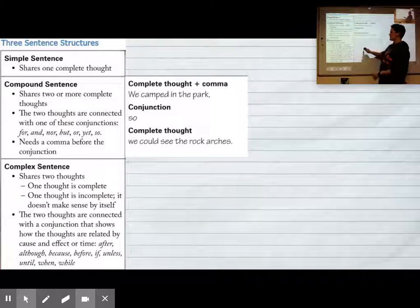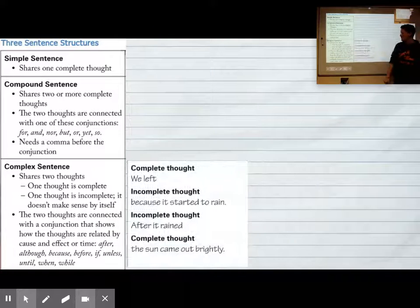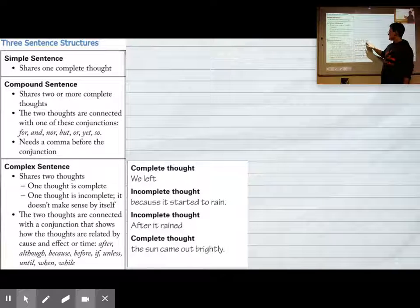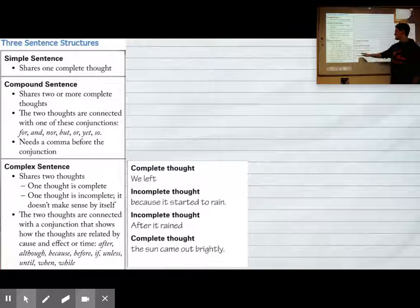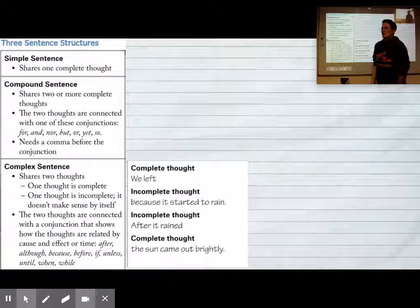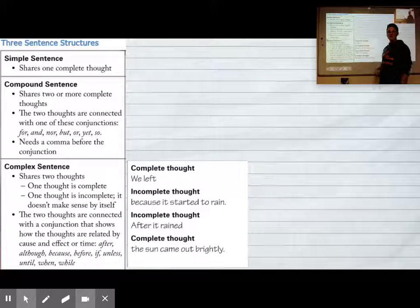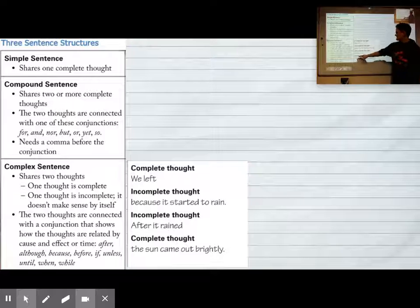And a complex sentence: complete thought, we left, incomplete thought, because it started to rain. Because it started to rain is an incomplete thought. We're like, well what happened because it started to rain? Well, we know that they left because it started to rain.